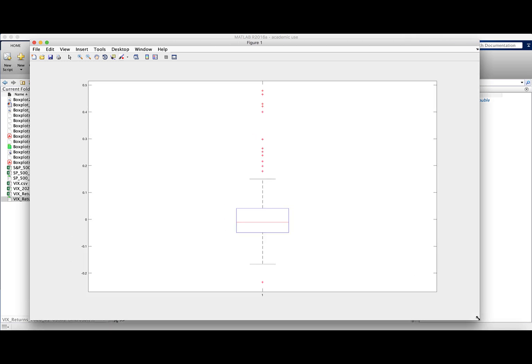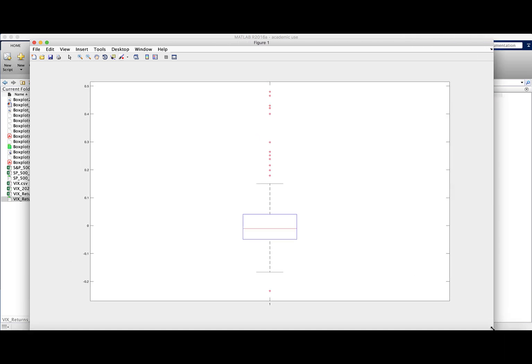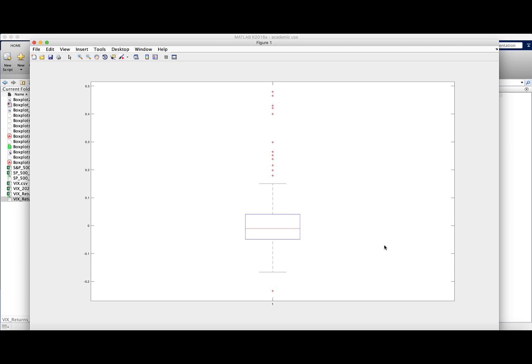And we see here we have a boxplot for those daily net returns on the VIX, which is the volatility, implied volatility index for the S&P 500 for the first nine months of the corona pandemic. We see our axis here goes from about negative 25 percent to about 50 percent.